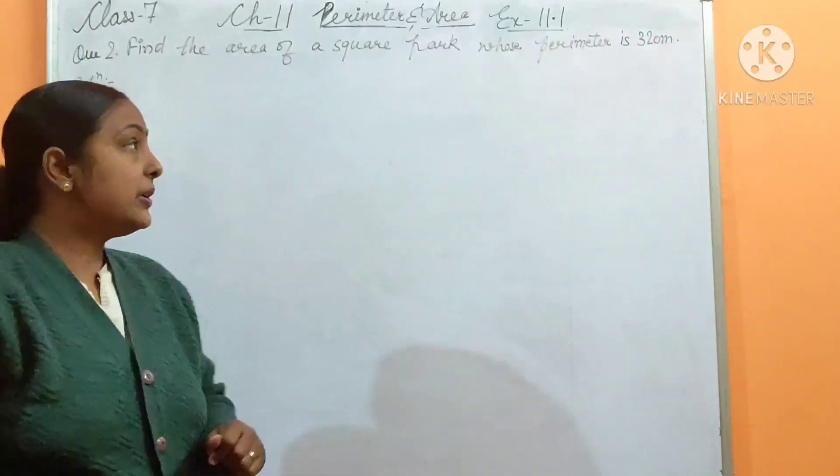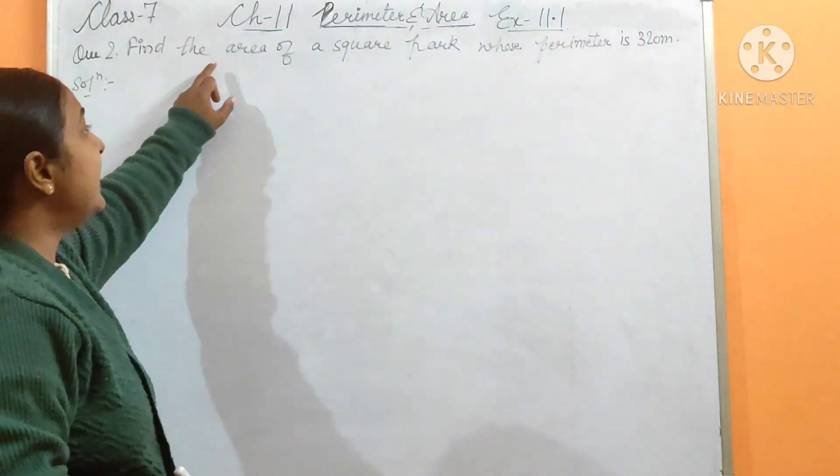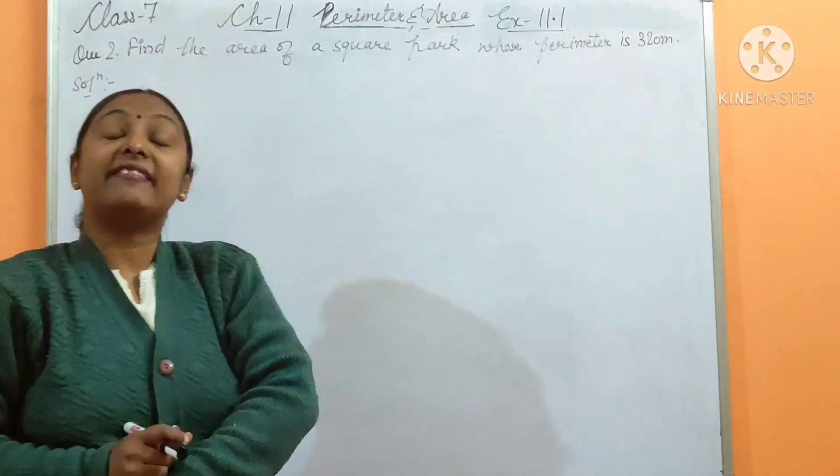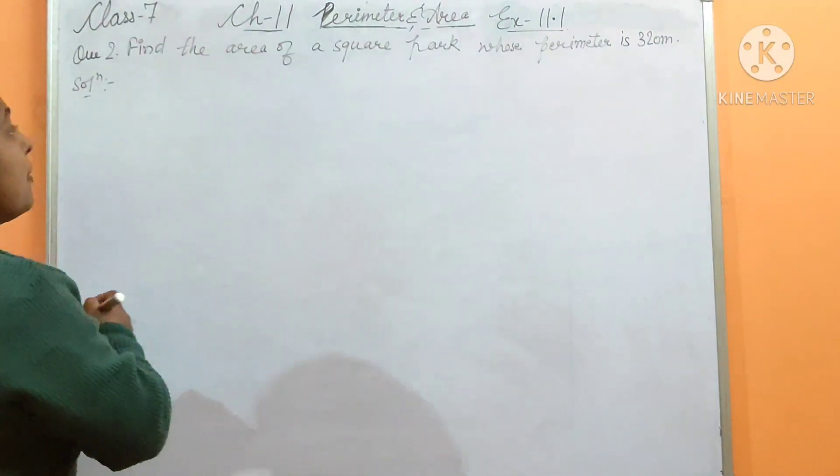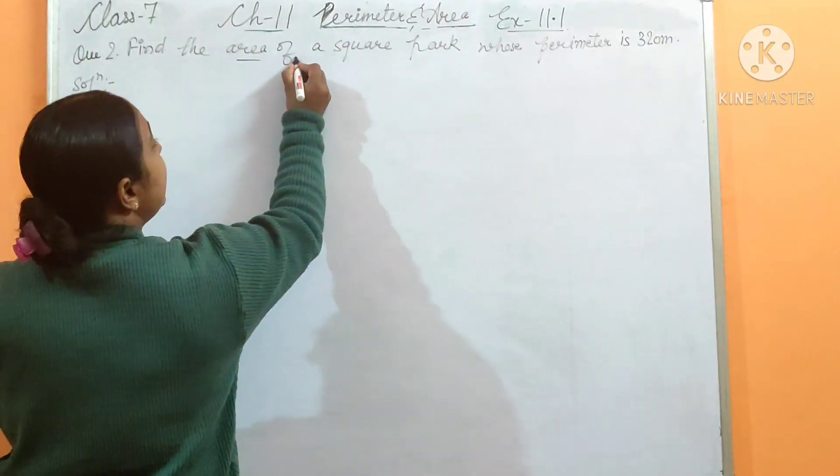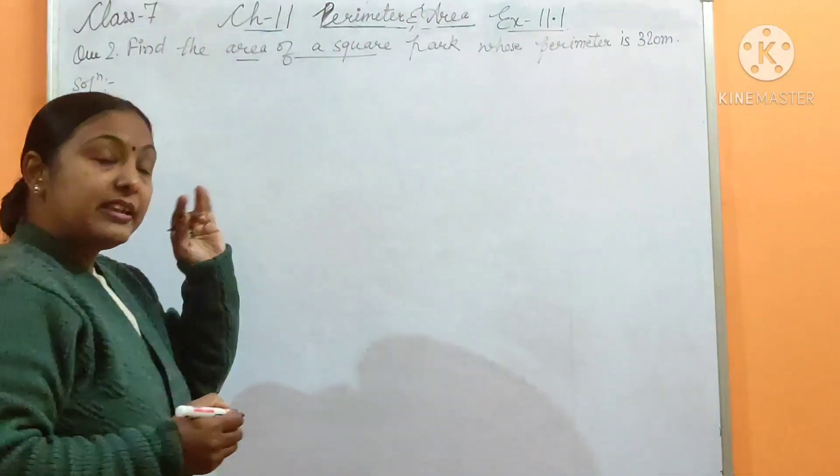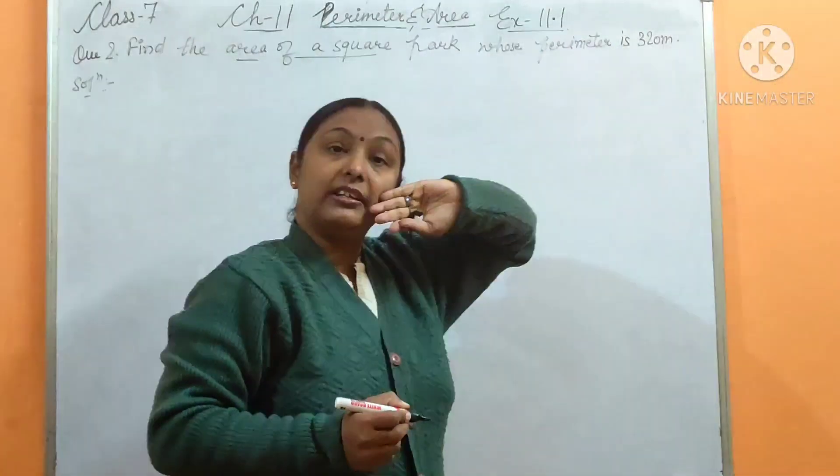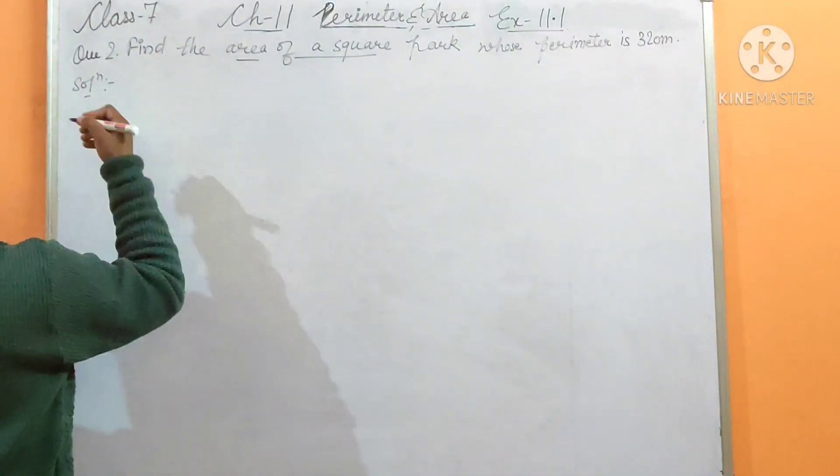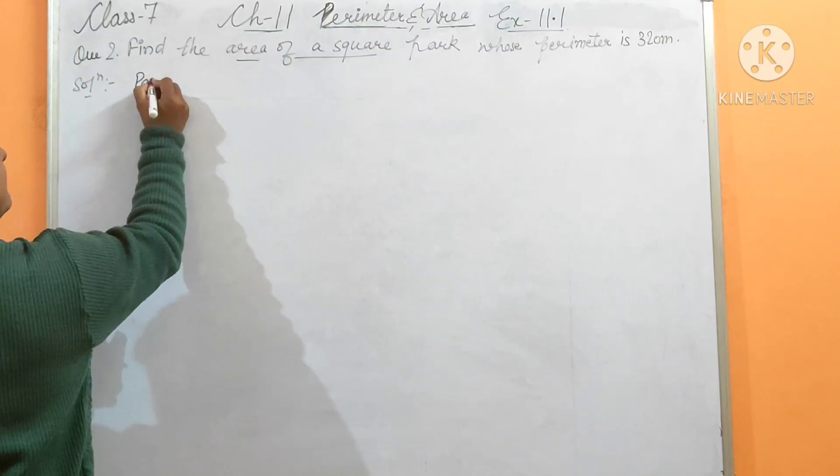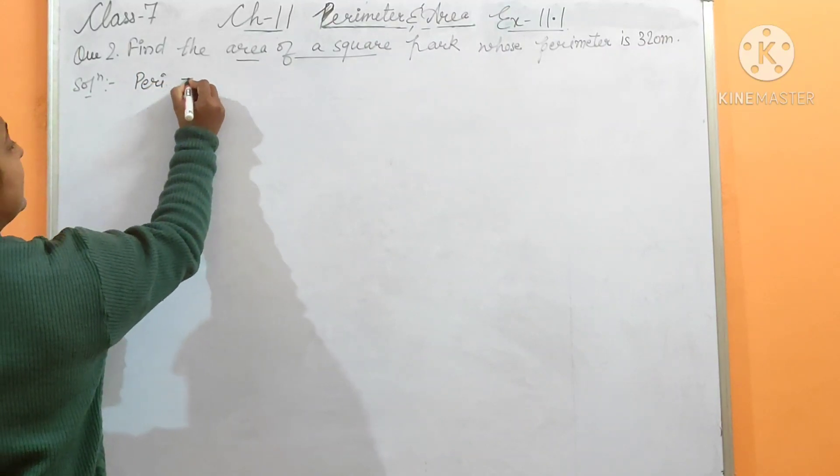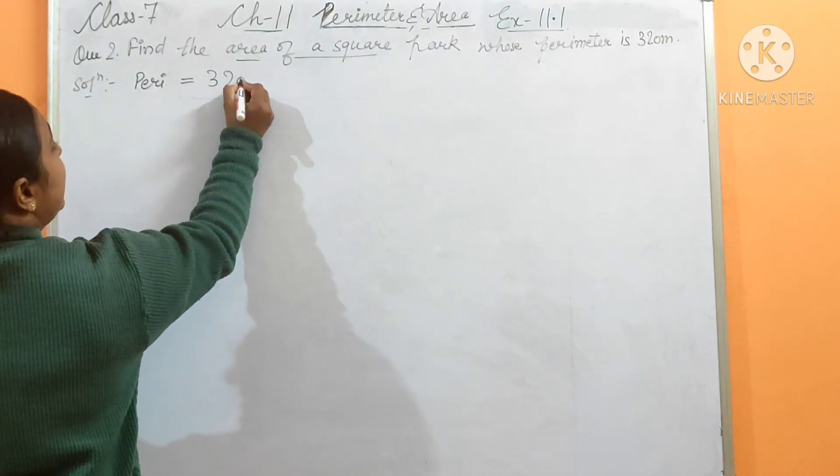Let's come to the second question. Find the area of a square park whose perimeter is 320 meters. Here we find the area of the square, and what is given? Perimeter is given - perimeter equals 320 meters for a square.